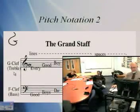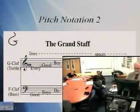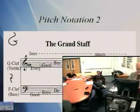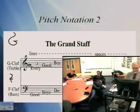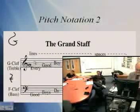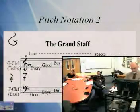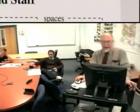The F clef in the old days looked like this — something like that — and that looked more like an F. So these two dots surround the line F. The mnemonic for the lines on the grand staff: Every Good Boy Deserves Fudge. The spaces spell FACE. The bass clef: Good Boys Do Find Always, and the spaces are All Cows Eat Grass.